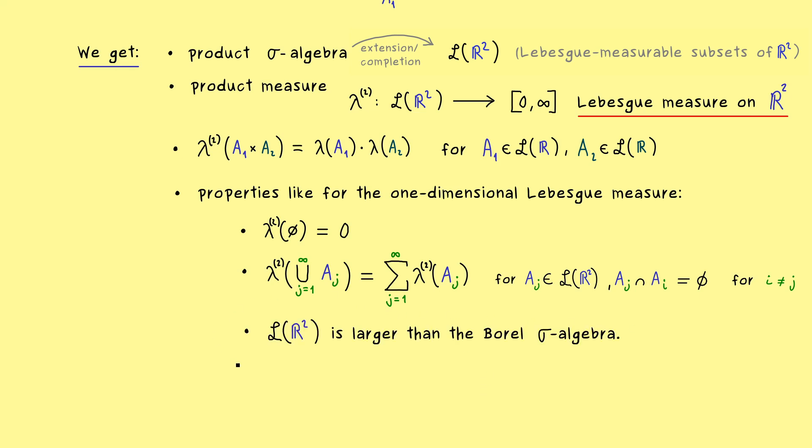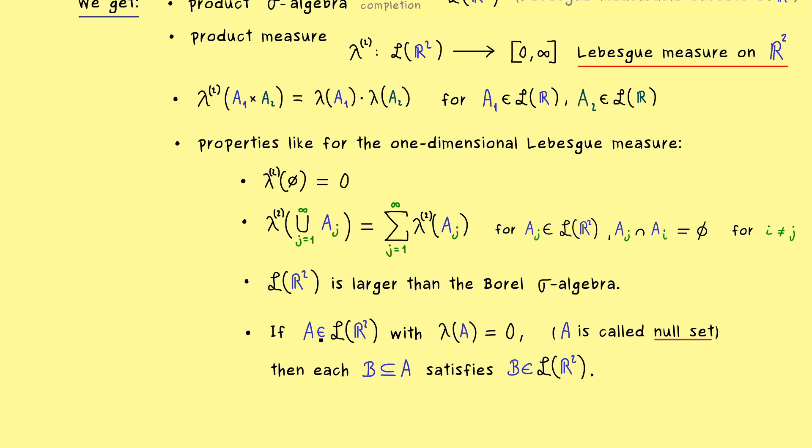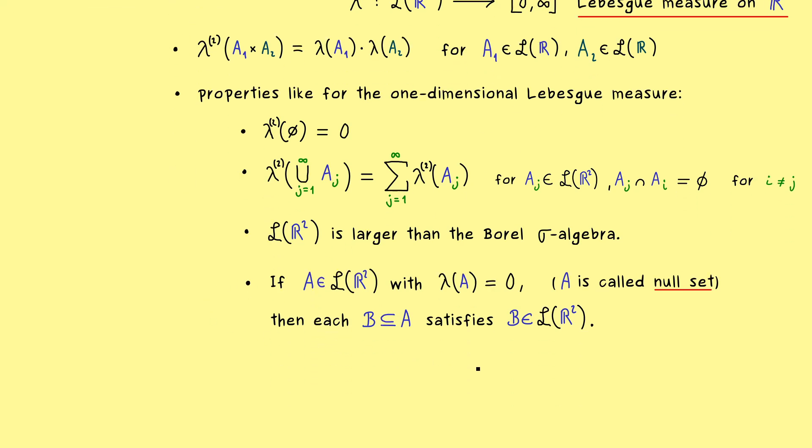Then we also get that the sigma algebra we have here contains all the Borel sets. This means all open sets, all closed sets you can imagine are included in our sigma algebra. In fact, the sigma algebra of the Lebesgue measurable sets is so large, that we also have this fact, which we call completeness. It tells us, that subsets of sets with area zero are already included in the sigma algebra.